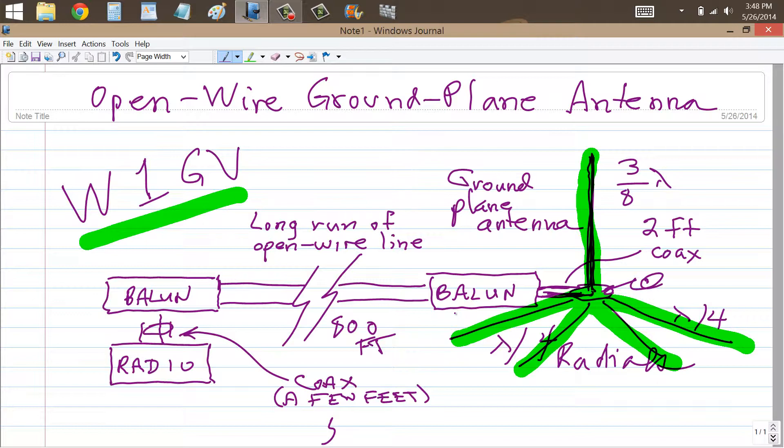Well, you can fabricate your own open wire line, say, with wires spaced six inches apart with plastic spacers every couple of feet, and you can make that stuff have practically zero loss.